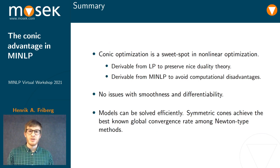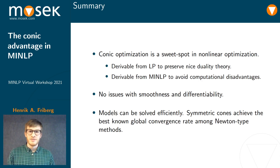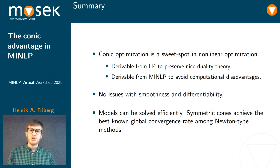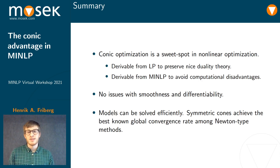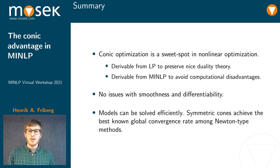In summary, conic optimization is like a sweet spot in nonlinear optimization. You can derive it from linear programming by extending duality theory, and you can derive it from mixed-integer nonlinear programming by following the best practices mentioned. With conic optimization, you have no issues with smoothness or differentiability, and models can be solved efficiently. In particular, symmetric cones achieve the best-known global convergence rate among Newton-type methods.